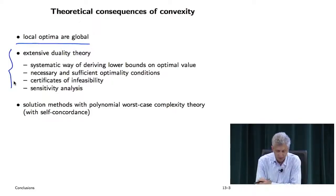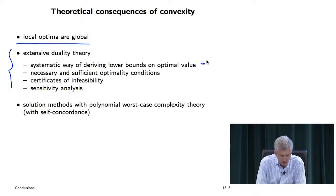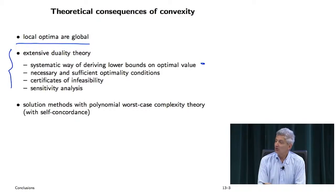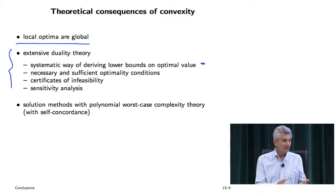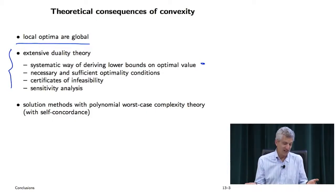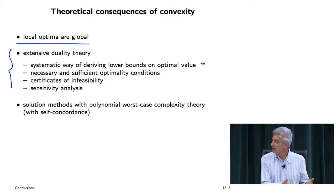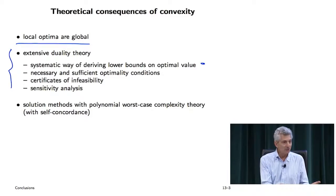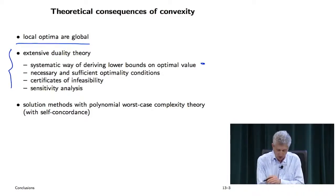There's an extensive duality theory. One way to think of it is as a very systematic way to derive lower bounds on the optimal value. Even for non-convex problems, this is interesting — if you can't solve the problem, you say here are some lower bounds, and if you come up with things that satisfy these, then this is a lower bound. That's actually very valuable often.